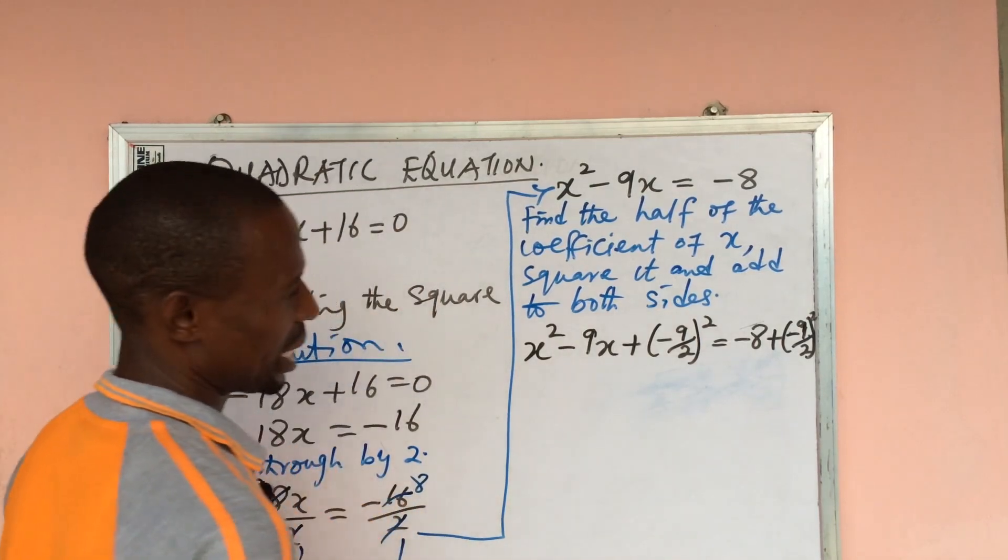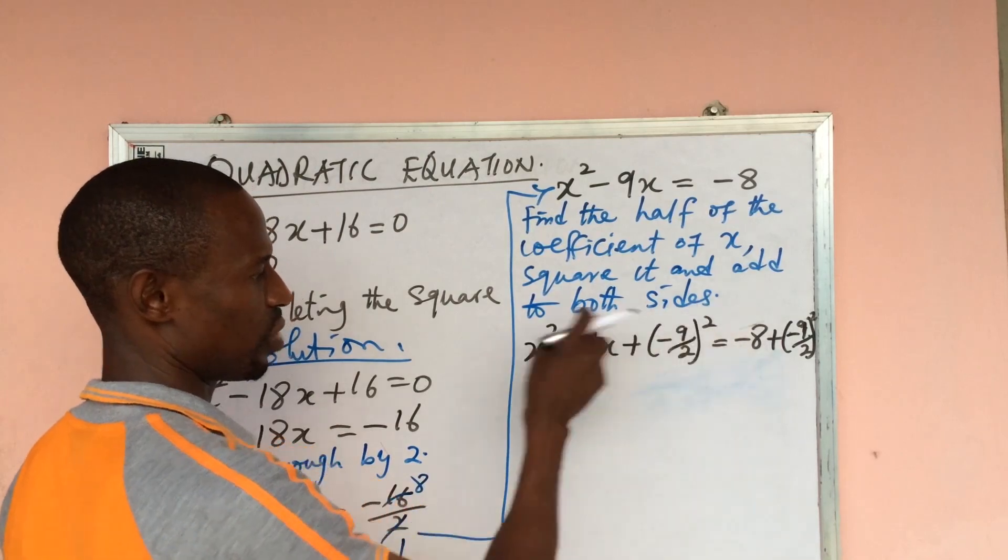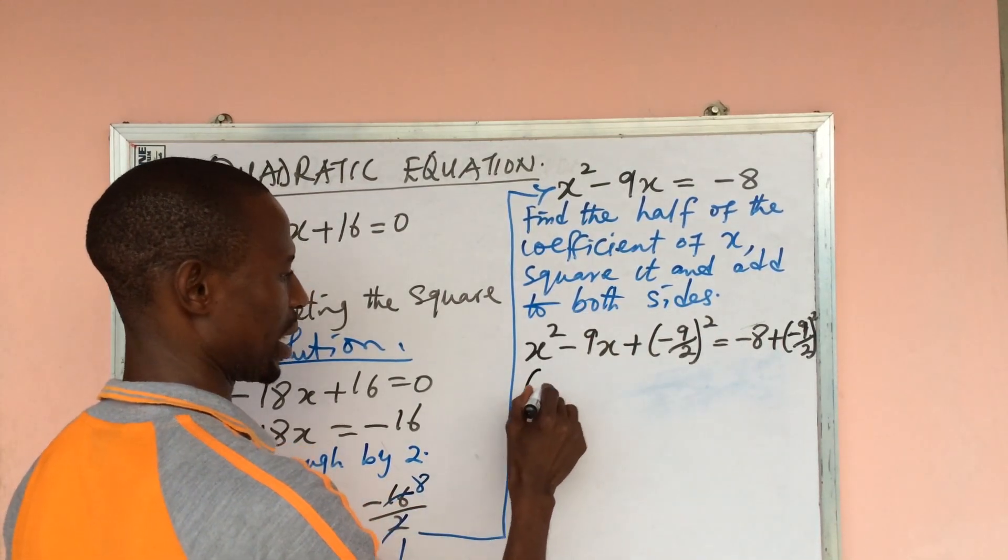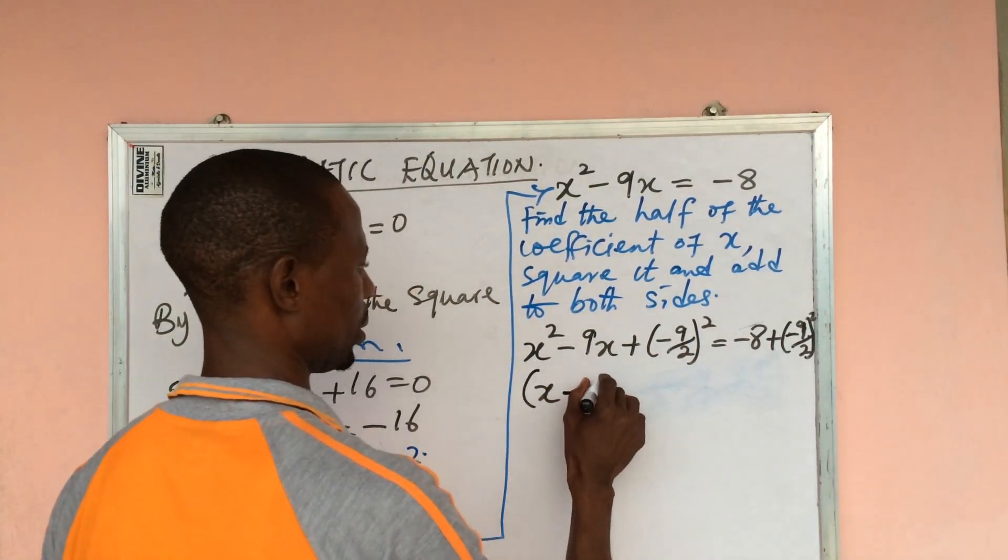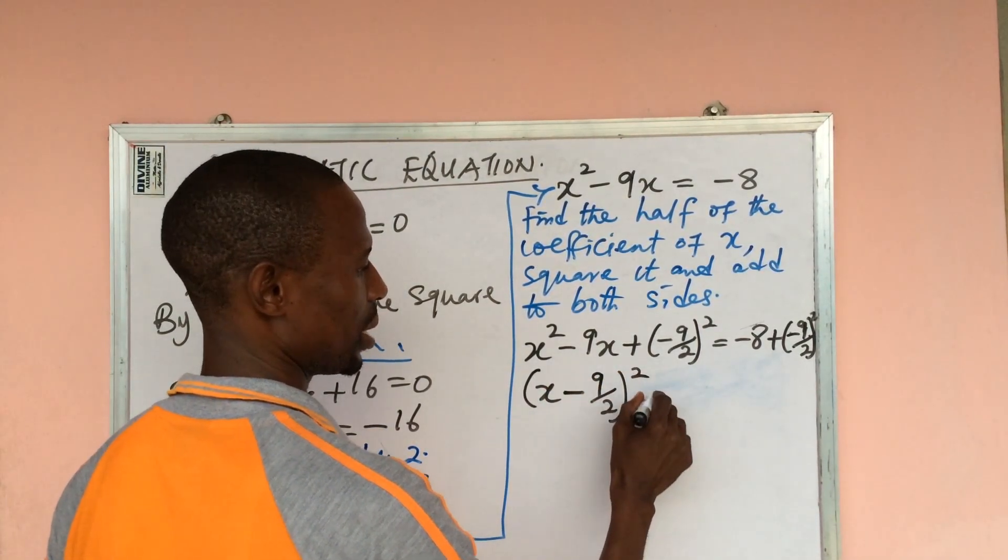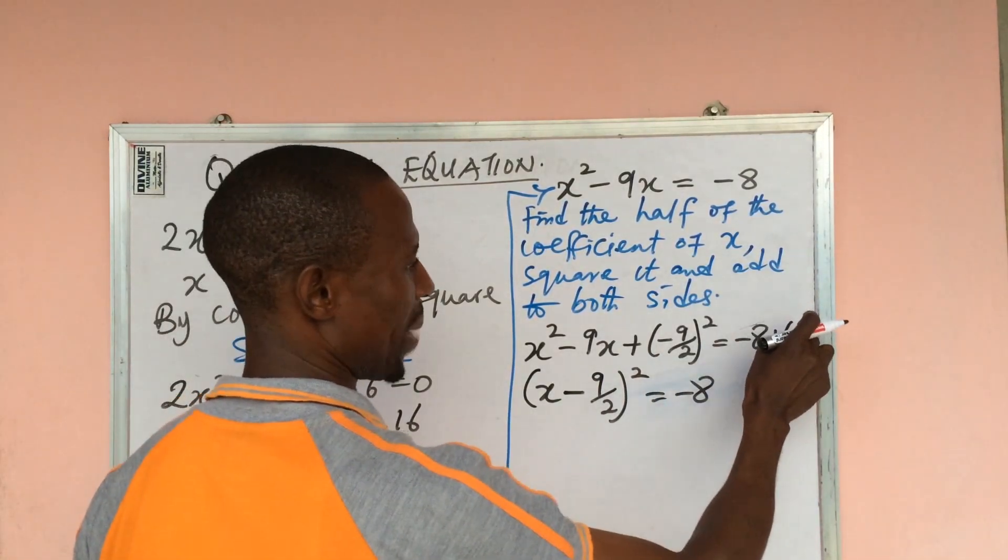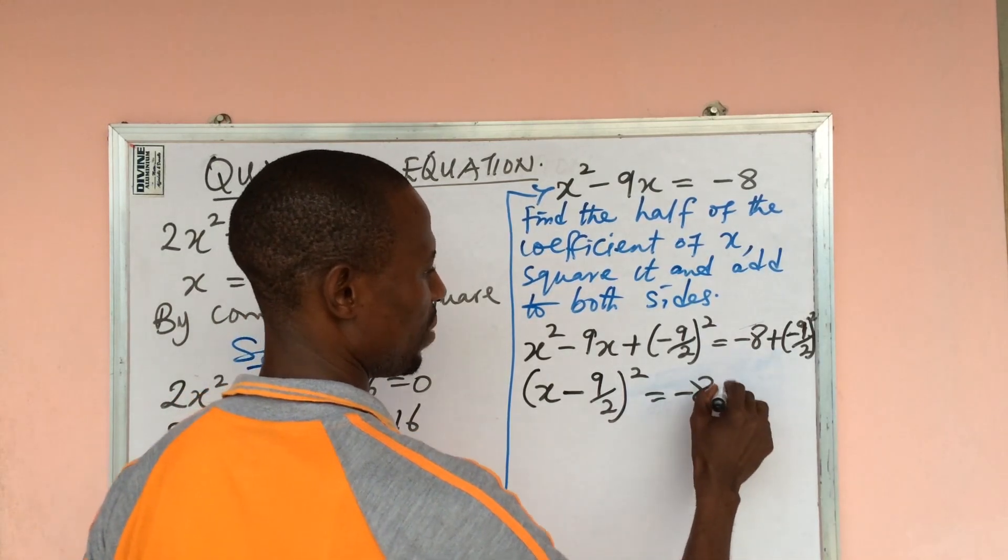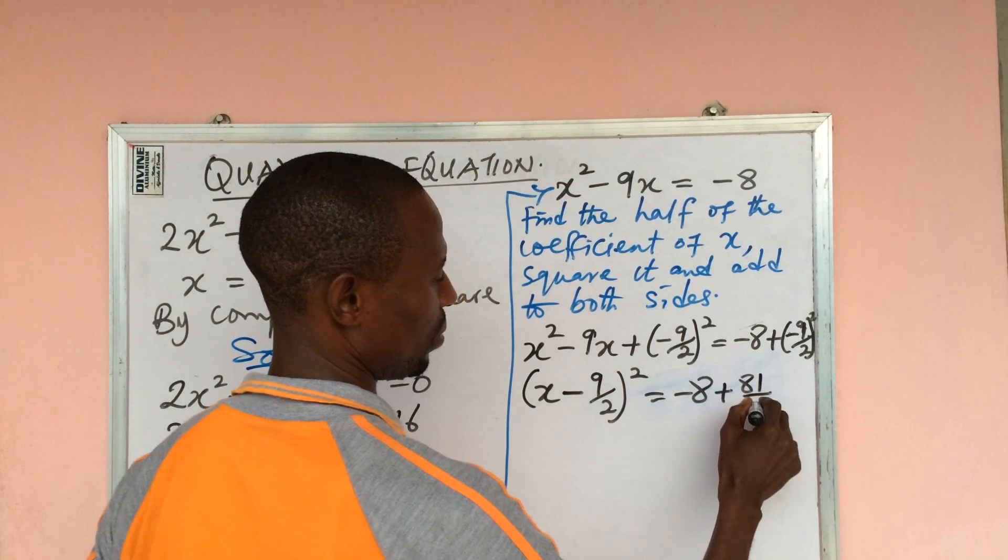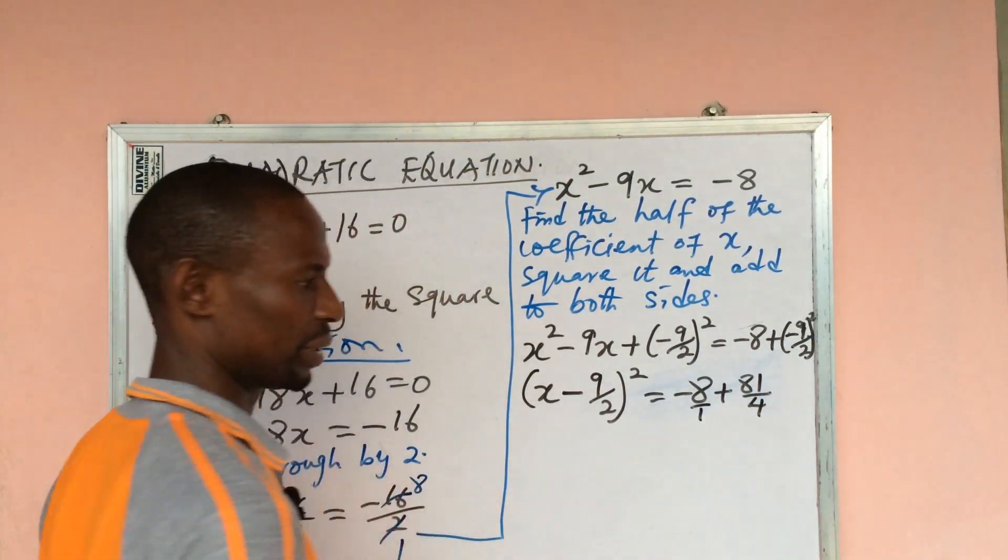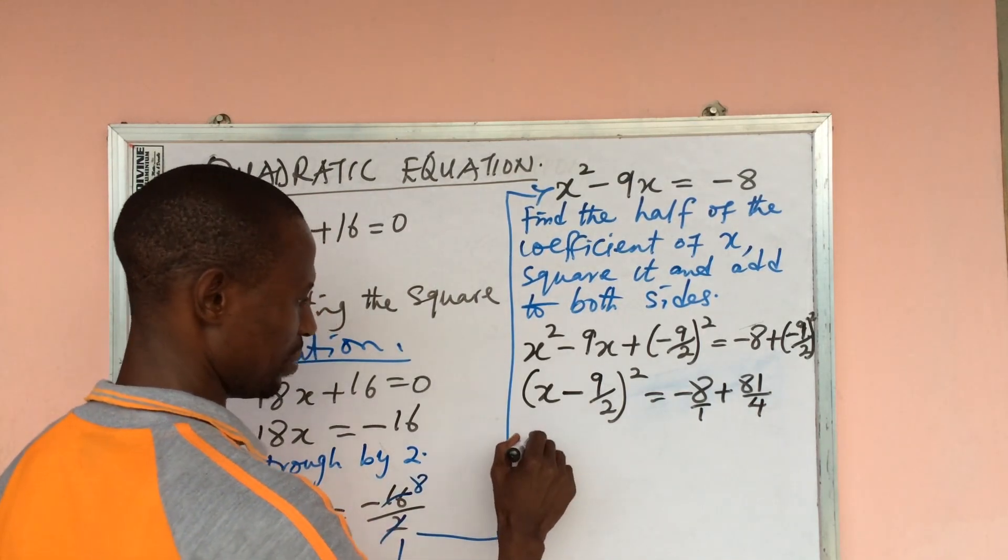From here, we look at this. At this stage, this middle term will leave. We'll have a square here, so two of them can come together to give us (x - 9/2)² = -8 + 81/4.